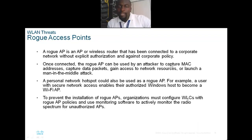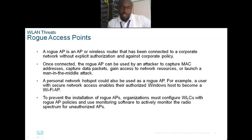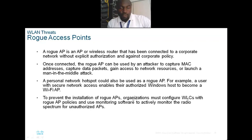Once connected, a rogue AP can be used by an attacker to capture MAC addresses, capture data, provide unauthorized network access, or even launch a man-in-the-middle attack. A personal network hotspot could be used as a rogue AP — a user with a secure network access enabled could turn their authorized Windows host into a Wi-Fi AP. To prevent rogue AP installation, organizations must configure WLC with rogue AP policies and use monitoring software to actively monitor the radio spectrum.